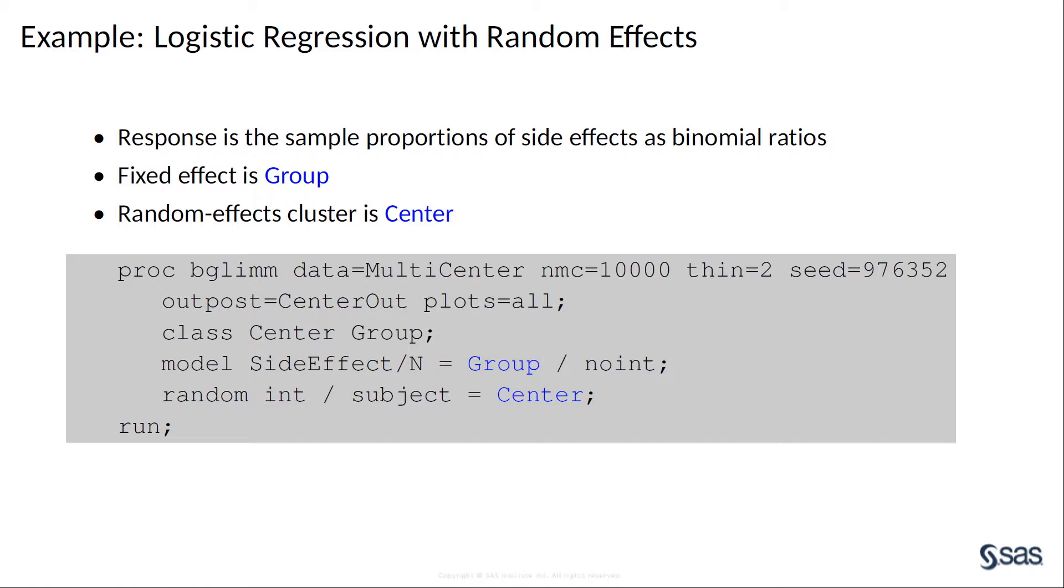Here, the code shows how to use PROC BGLIM to fit the model. The NMC option specifies the number of Monte Carlo iterations in the main simulation stage after burning. The Thin option controls the thinning of the chain and specifies that one of every two samples be kept.